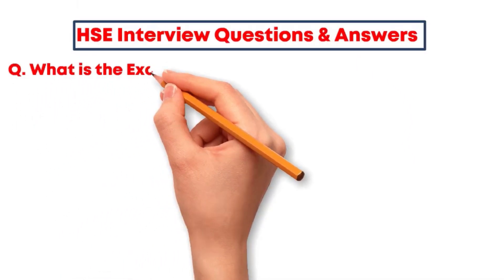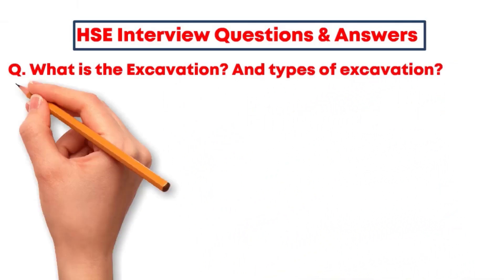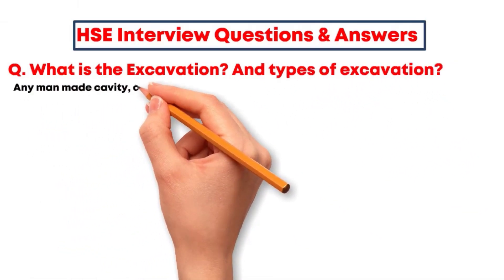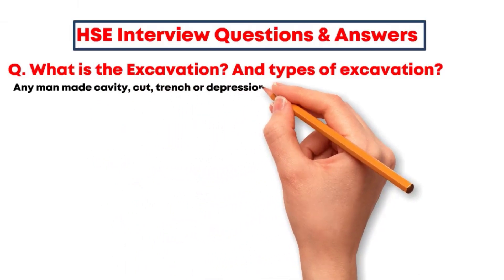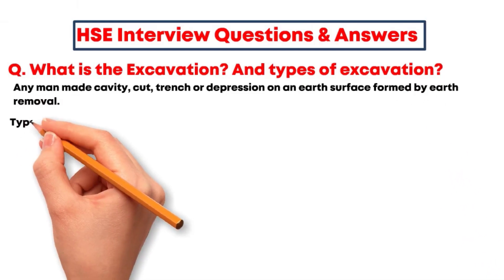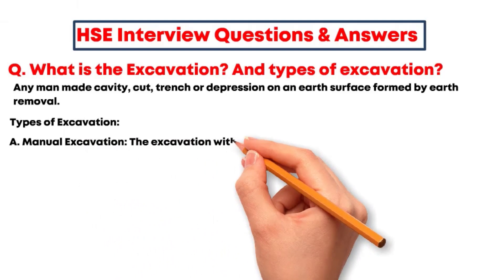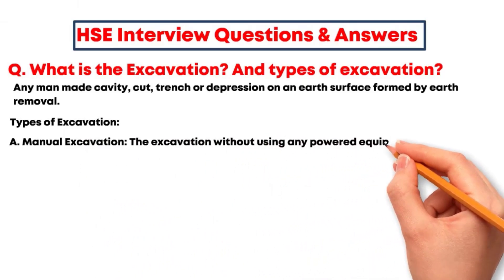Question one: What is excavation and types of excavation? Answer: Any man-made cavity, cut, trench or depression on an earth surface formed by earth removal. Types of excavation: A. Manual excavation - the excavation without using any powered equipment. B. Mechanical excavation - the excavation work using any electrical or mechanical equipment.